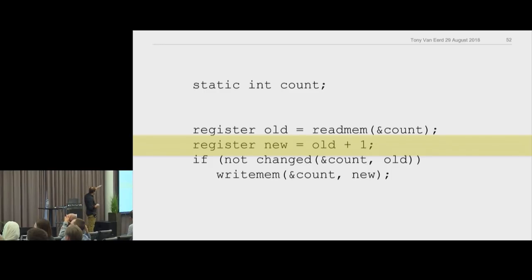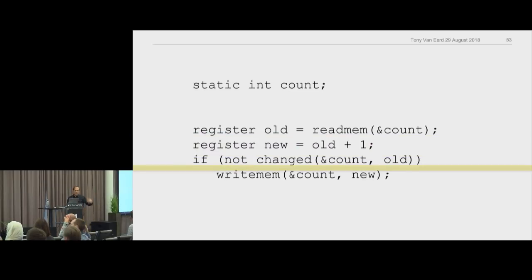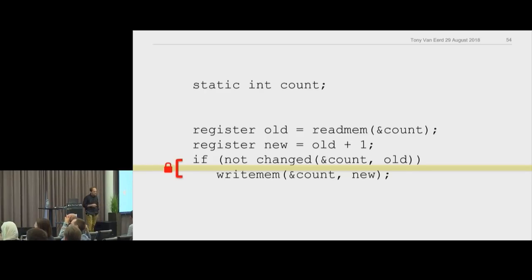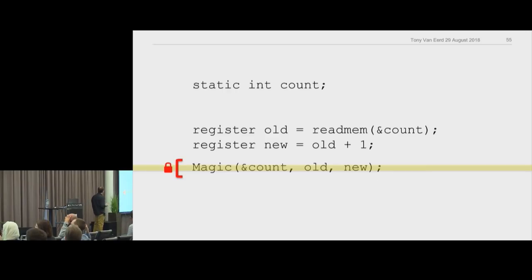What we'd really like is: if count hasn't changed, then write the variable. I read count, I'm going to increment it — if count hasn't changed from what it used to be, write the memory. But that gets us nowhere because we've just moved the gap one line lower. What we really need is those two lines of code to happen at the same time — atomically — eliminating that little gap.